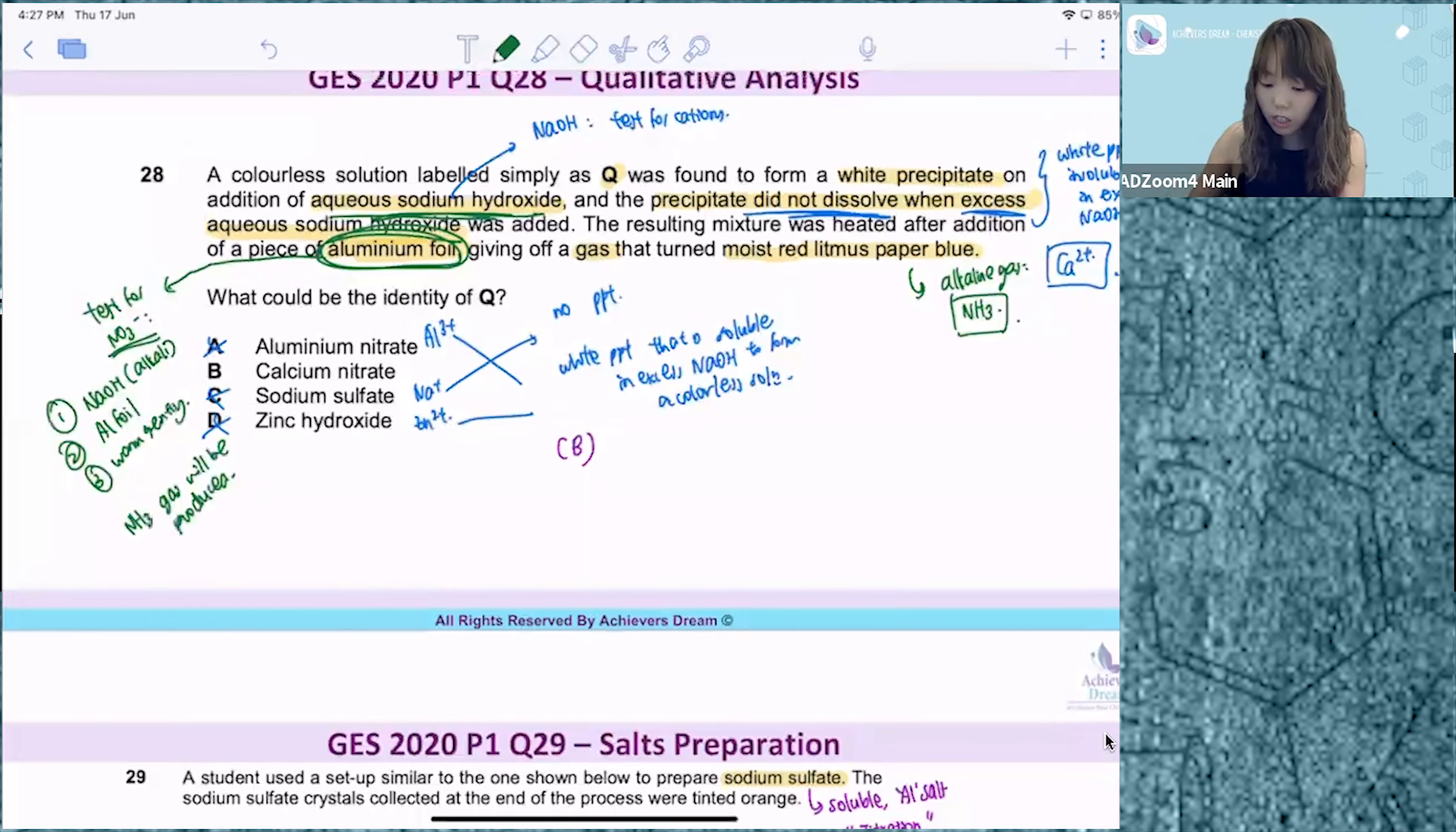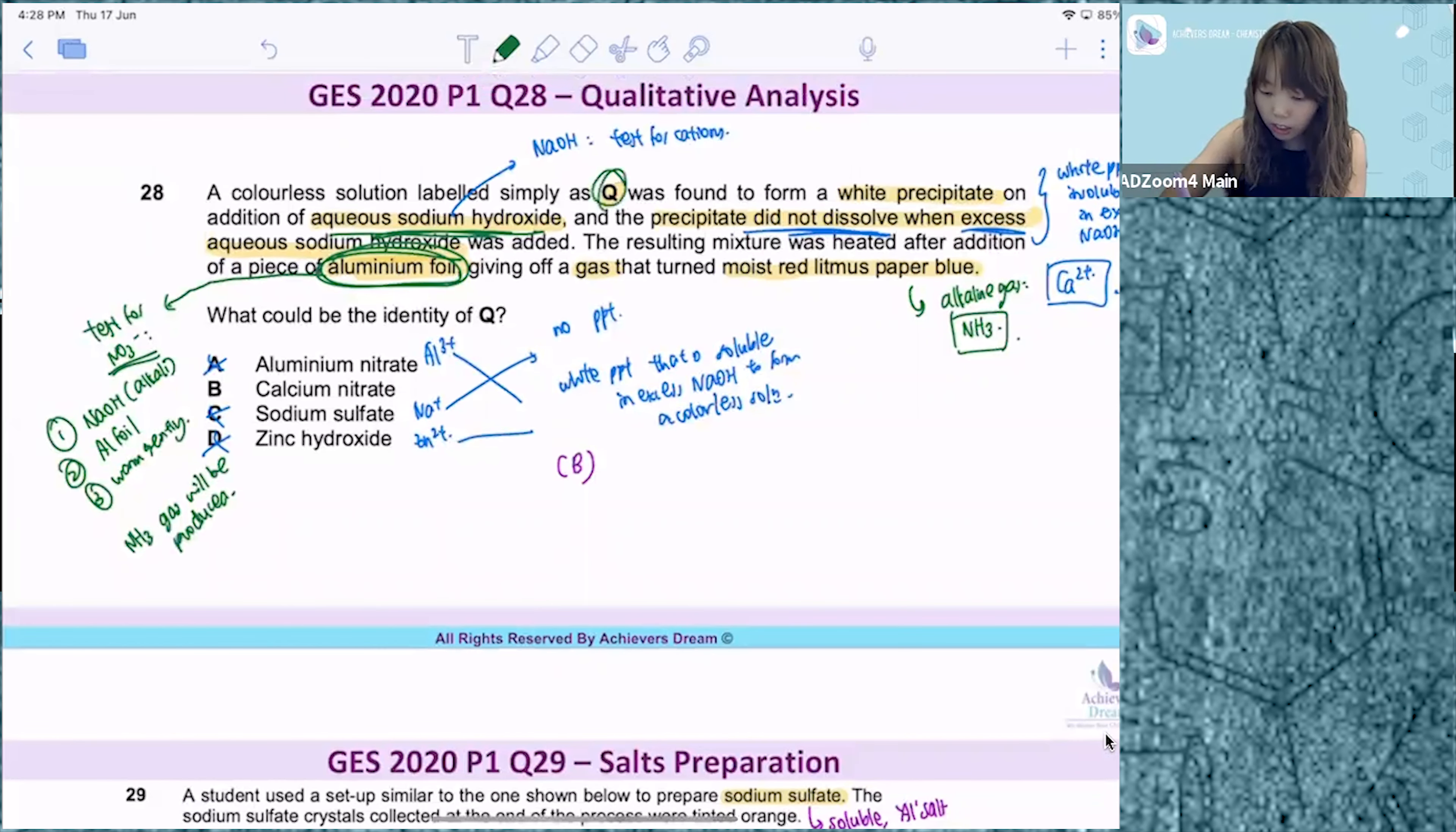If nitrate is present, ammonia gas will be produced. Which is the case. So this means that your colorless solution contains calcium and nitrate ions. So that's why the answer is B.